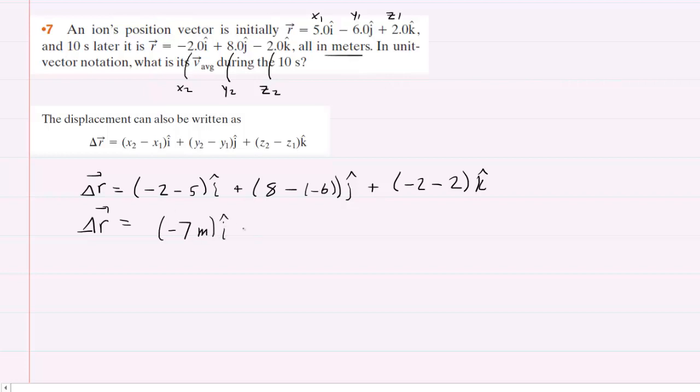So we can actually say negative 7 meters i-hat plus 14 meters j-hat plus negative 4 meters k-hat. So now that we have the displacement vector, we can easily find the average velocity.